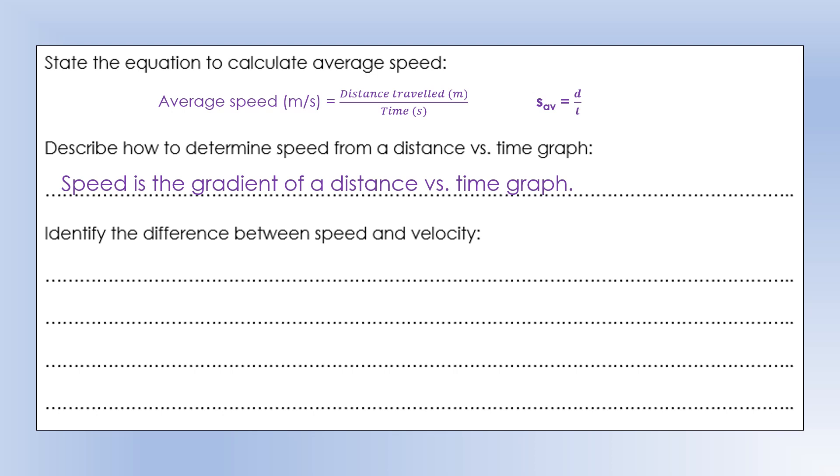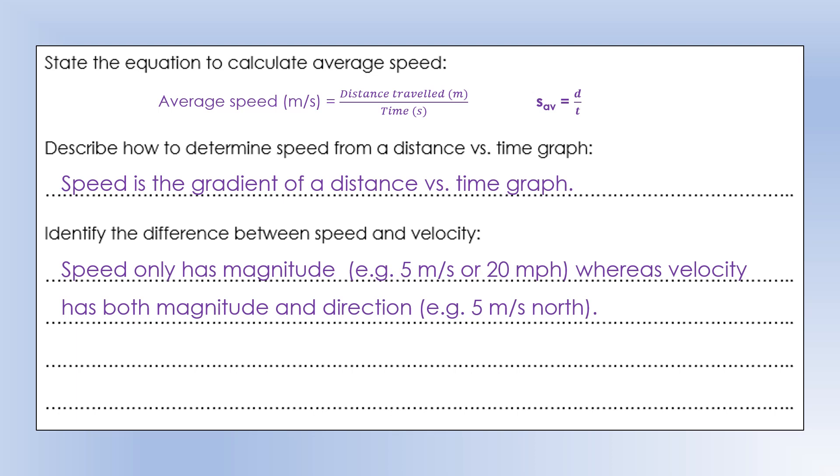Identify the difference between speed and velocity. Speed only has magnitude or size. Speed is 5 meters per second, speed is 20 miles per hour. Velocity has both magnitude and direction. It would be 5 meters per second north, or 10 meters per second at 30 degrees. That means that speed is a scalar, and velocity is a vector quantity. Vectors have direction and magnitude.